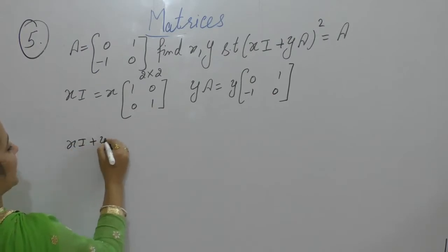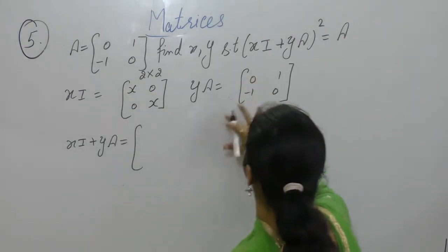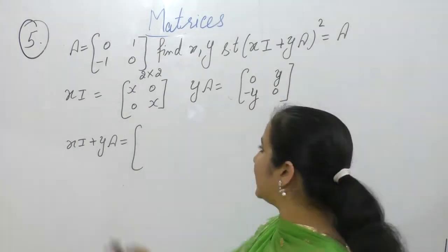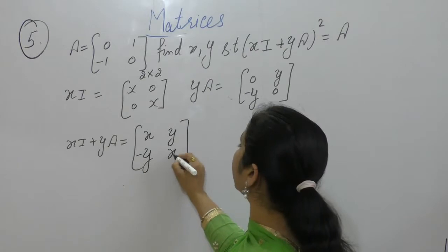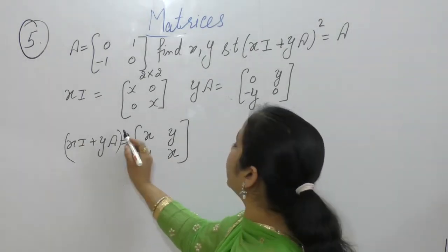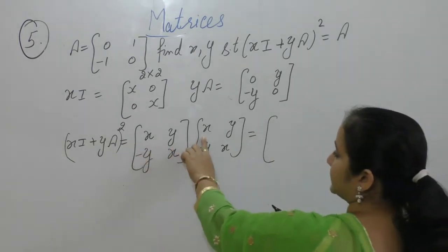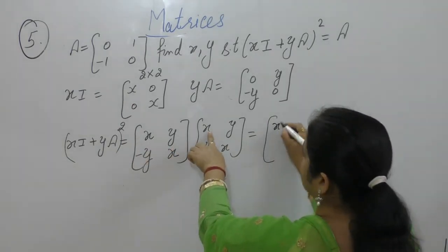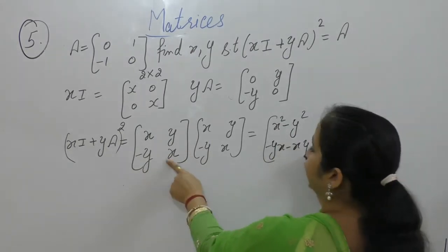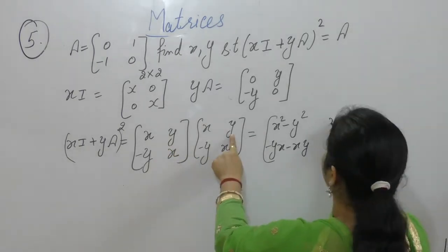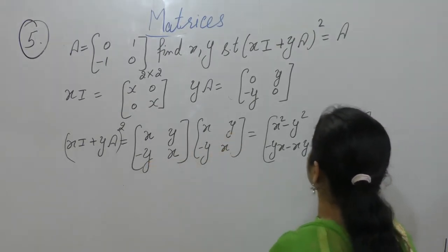Now compute xI + yA. Multiply the identity matrix by x and the A matrix by y. xI + yA gives us [[x+0, 0+y], [0+(-y), x+0]], which equals [[x, y], [-y, x]]. Now compute (xI + yA)² by multiplying these two matrices together.